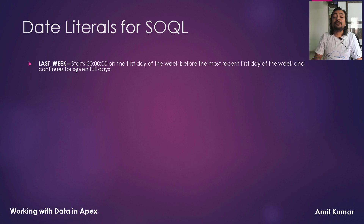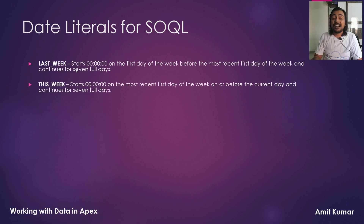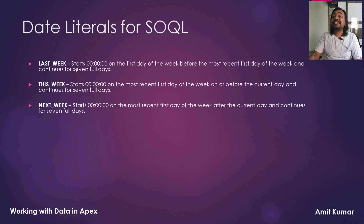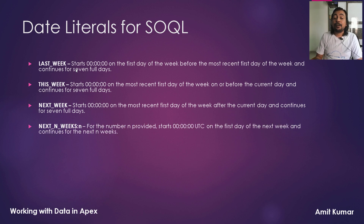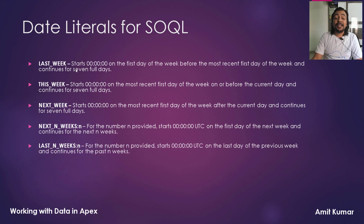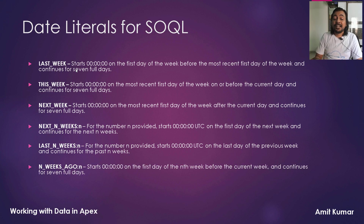Last week starts with 12 AM on the first day of the week before the most recent first day of the week and continues for 7 full days. This week starts with 12 AM on the most recent first day of the week on or before the current day and continues for 7 full days. Next week starts with 12 AM on the most recent first day of the week after the current day and continues for 7 full days. Next N weeks starts 12 AM UTC on the first day of the next week and continues for the next N weeks. Last N weeks starts 12 AM UTC on the last day of the previous week and continues for the past N weeks. N weeks ago starts with 12 AM on the first day of the Nth week before the current week and continues for 7 full days.